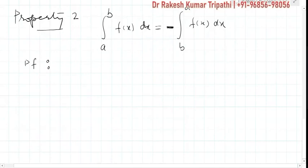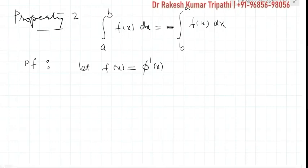Let's try to prove this. Let us assume that f(x) be an anti-derivative of φ(x). This means let f(x) be φ'(x). We are saying that f(x) is the derivative of φ(x).